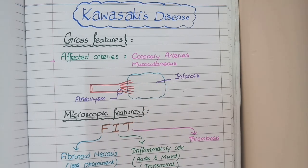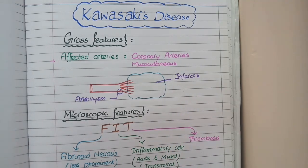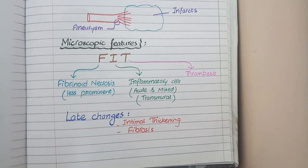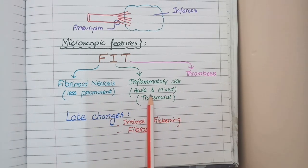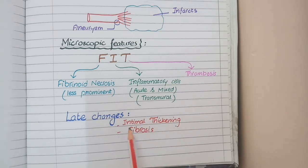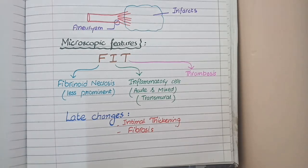Other than the site differences, all features are similar to polyarteritis nodosa, including aneurysms in the vessel wall and infarcts or ulcerations in the affected organs. On microscopy, Kawasaki's disease also manifests as fibrinoid necrosis, inflammatory cells, and thrombus in the lumen. In the late stage, Kawasaki's disease causes intimal thickening and fibrosis of the affected vessels.